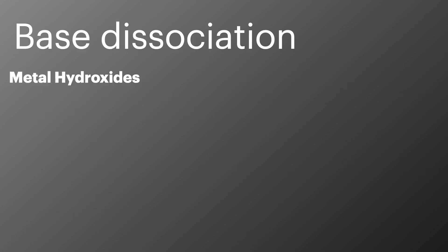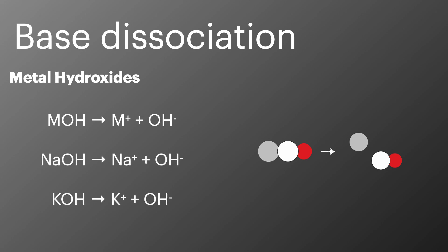If we consider bases, bases also dissociate. Some bases such as metal hydroxides dissociate first before they accept protons. Here we've used M to represent the metal ion and then we can see examples of the common strong bases sodium hydroxide and potassium hydroxide.